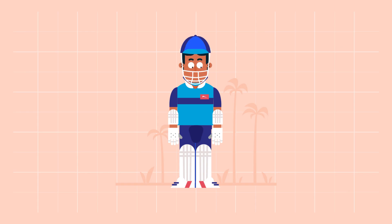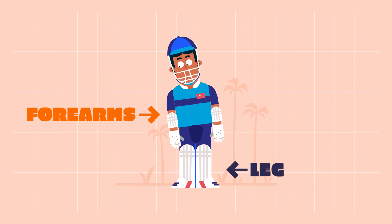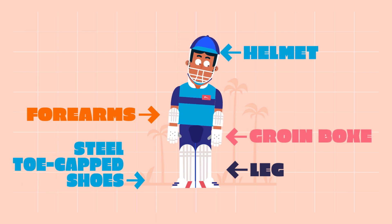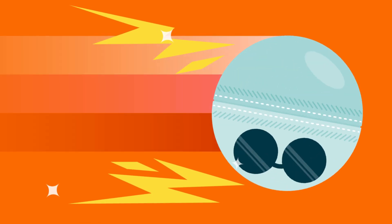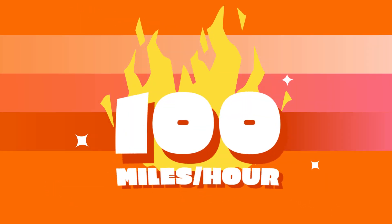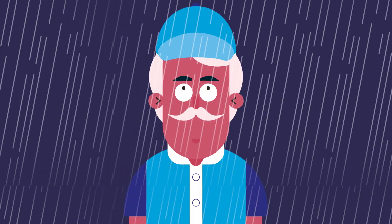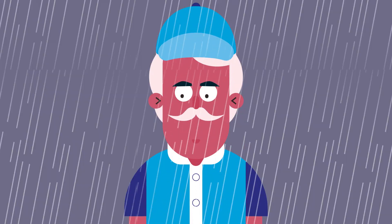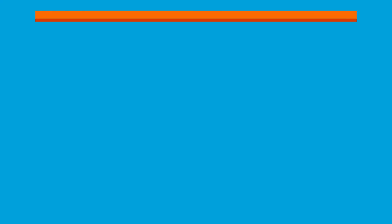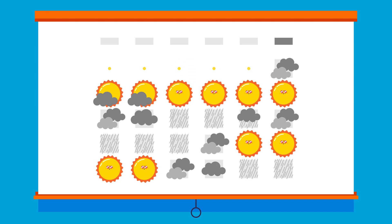Batters wear lots of pads on the legs, thighs and forearms, along with groin boxes, helmets and steel toe cap shoes, because some bowlers can whip down the ball at up to 100 miles per hour and bounce it up to head height. Rain will stop the match for a period — sometimes whole days are wiped out — and captains of the teams might have to rethink their strategies according to the weather forecast for the next day.